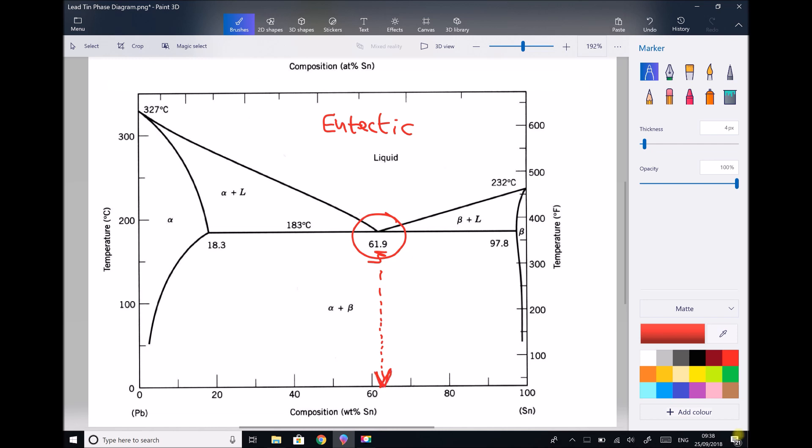What do we mean by 61.9? Well we know from our x-axis that the eutectic composition is 61.9% tin. Meaning the remaining 38.1% would be lead. So our eutectic composition is actually tin rich by weight.